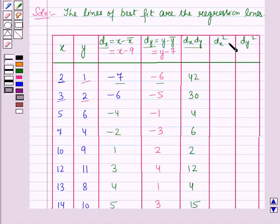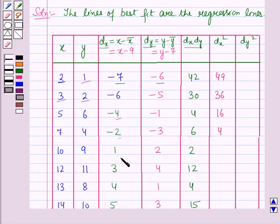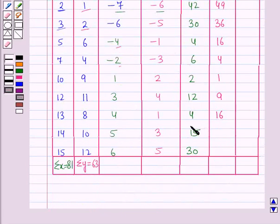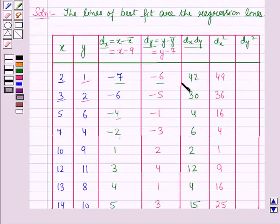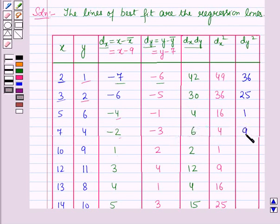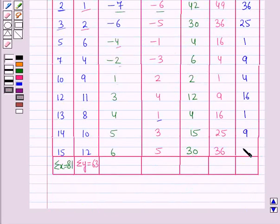Now we find dx squared: 49, 36, 16, 4, 1, 9, 16, 25, 36. Then dy squared: (−6)² = 36, (−5)² = 25, (−1)² = 1, (−3)² = 9, 2² = 4, 4² = 16, 1² = 1, 3² = 9, 5² = 25.